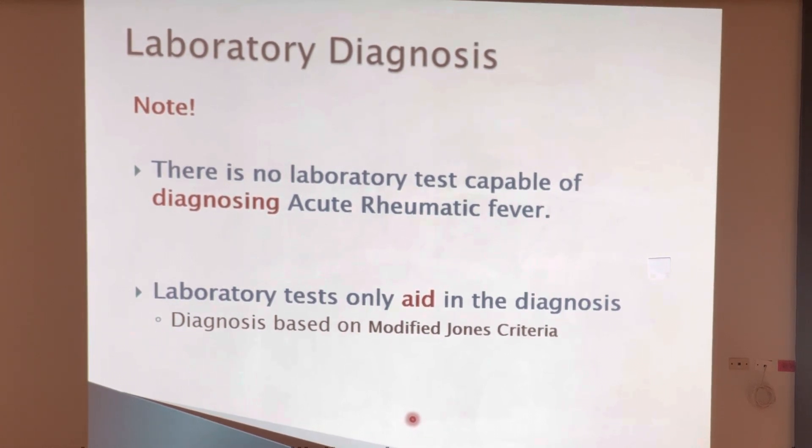In the lab, we're going to be culturing — meaning we're going to try to isolate and grow up the Group A Streptococcus — so that we can provide evidence of a recent infection with Group A Strep. We'll be either taking a throat swab or, in the case of a patient with a skin infection, a swab from the affected area.